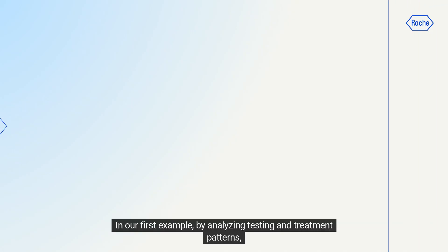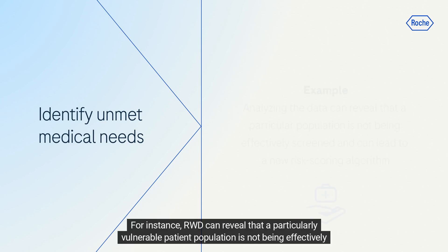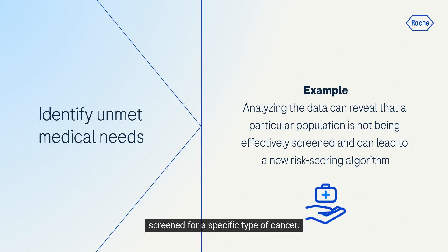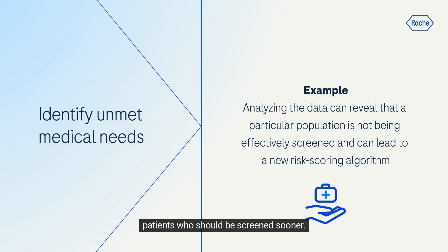In our first example, by analyzing testing and treatment patterns, gaps in patient care or unmet needs can be identified. For instance, RWD can reveal that a particularly vulnerable patient population is not being effectively screened for a specific type of cancer. In response, a risk-scoring algorithm can be developed to help healthcare professionals identify high-risk patients who should be screened sooner.